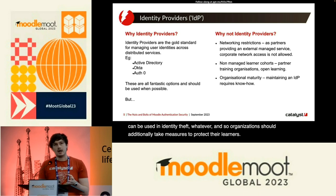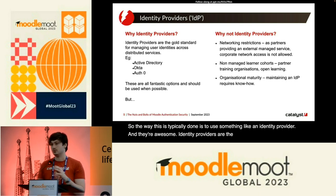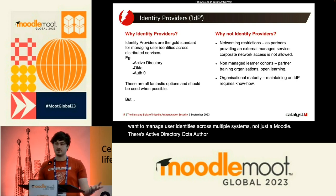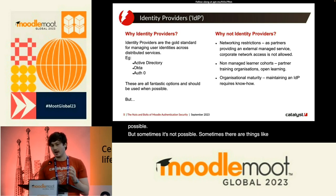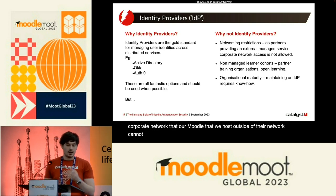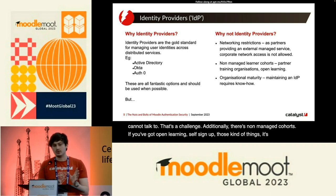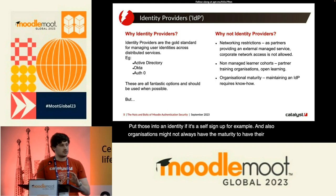The way this is typically done is to use something like an identity provider, and they're awesome. Identity providers are the gold standard for how we want to manage user identities across multiple systems, not just Moodle — Active Directory, Okta, Auth0. They should be used where possible. But sometimes it's not possible: there are things like corporate networks. I've worked with multiple clients who have an IDP behind a corporate network that our Moodle hosted outside cannot talk to. Additionally, there are non-managed cohorts — open learning, self-signup — those are hard to put into an IDP. And organizations might not always have the maturity to sustain their own IDP.